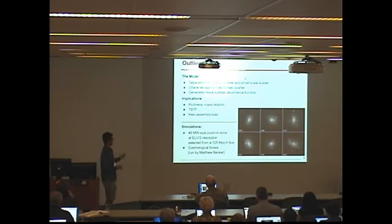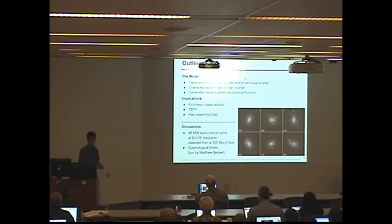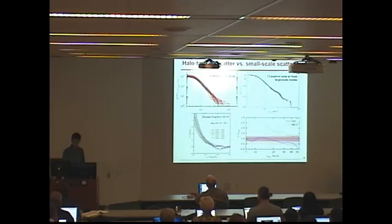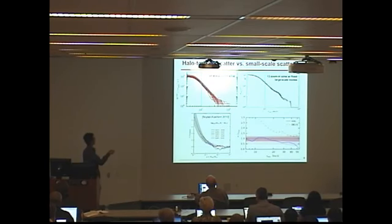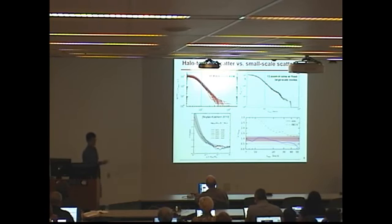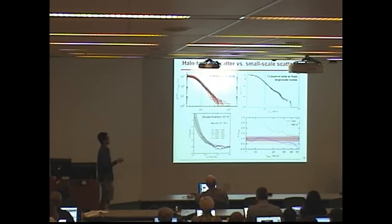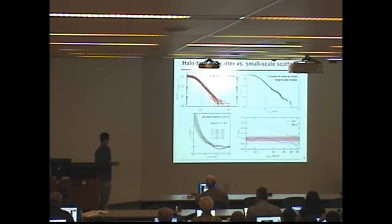As a side note, in this work we use simulations — a new suite of Milky Way zoom simulations, 46 of them, all isolated Milky Way-sized halos at the ELVIS resolution, plus a few cosmological box runs by Matt Becker. Here is the subhalo abundance function, colored by host halo concentration. You can see that with higher concentration, the normalization is much lower. We ran zoom simulations with fixed large-scale environment, and the scatter becomes much smaller — consistent with Poisson scatter.